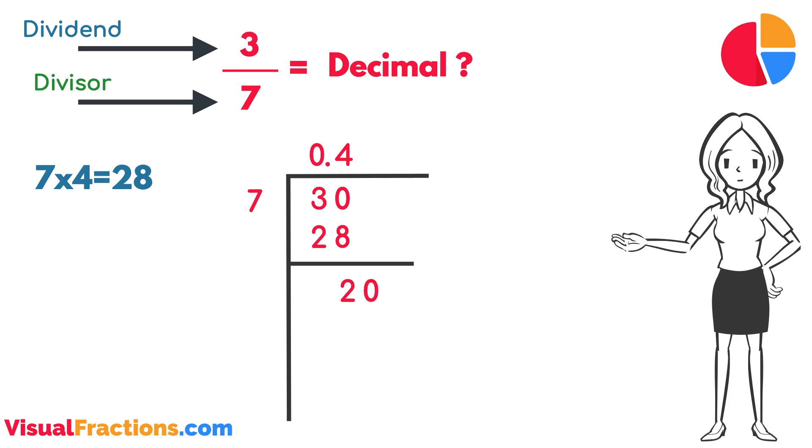Next, we add another zero to the remainder, making it 20. How many times does seven go into 20? It goes in two times, which we write next to the four in our quotient, giving us 0.42. Multiplying seven by two gives us 14. We subtract 14 from 20 to get a remainder of six.